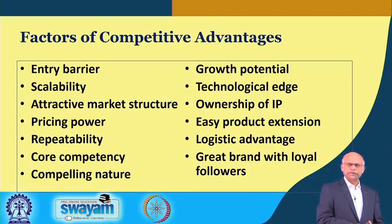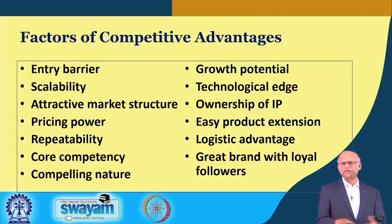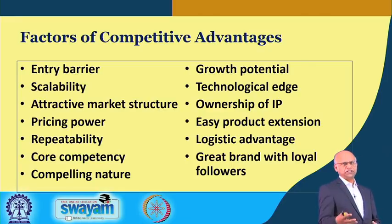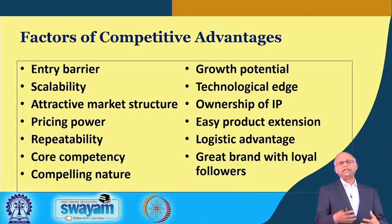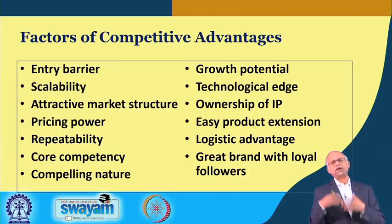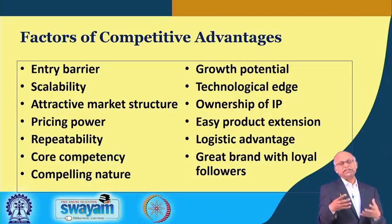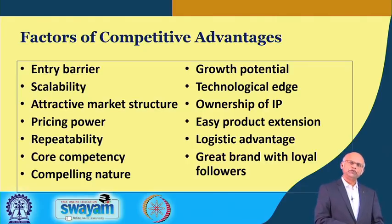Your product must have better efficacy compared to competitors, growth potential, and technological edge. Ownership of IP and technological edge are similar, but sometimes you may not have the IP but still have a technological edge — meaning your process is better or your product has better efficacy, and that may be protected by IP. Easy product extension means you advertise, create a brand, people become loyal to your company and brand, and you can safely put another product under the same brand. Customers already loyal to your brand will buy new products you promote.